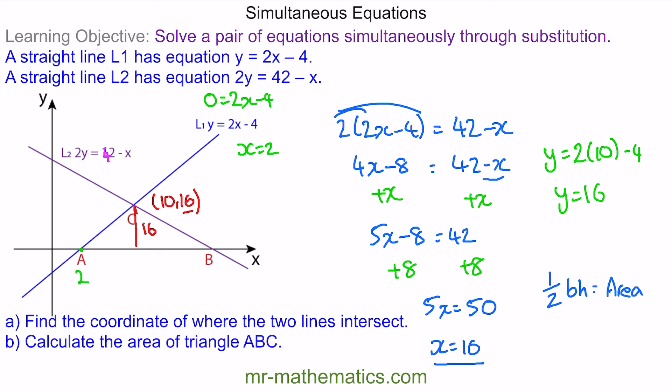Similarly for B, we know y is 0. So 2 lots of y is still 0 equals 42 minus x. So x must equal 42.